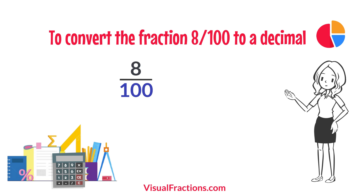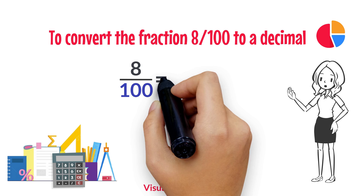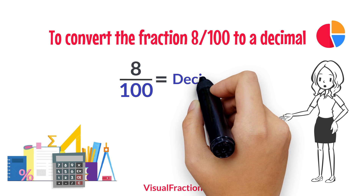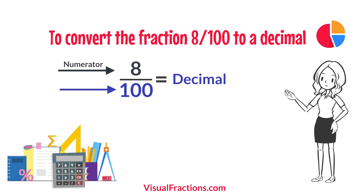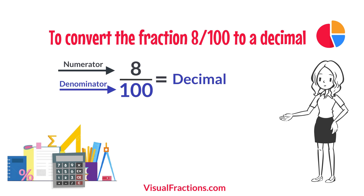To convert the fraction 8 100ths to a decimal, all we need to do is divide the numerator, the top number, by the denominator, the bottom number. So, we simply divide 8 by 100.